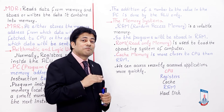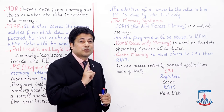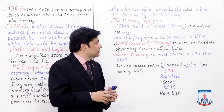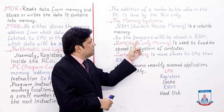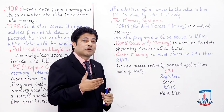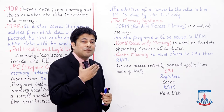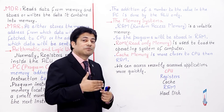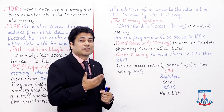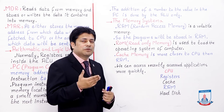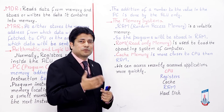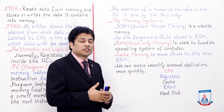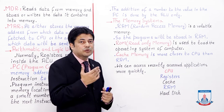RAM is temporary memory. Programs are stored in RAM and all running programs operate within RAM. The larger your RAM size, the more space your programs get and the faster your computer can operate. RAM typically comes in sizes like 2GB, 4GB, 8GB, 16GB, 32GB, and 64GB.